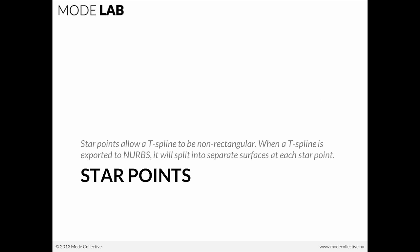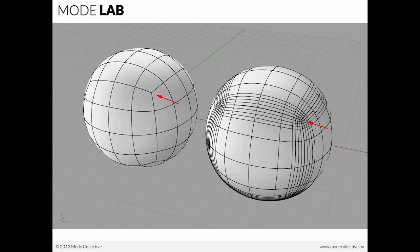The third are star points. Star points allow a T-Spline to be non-rectangular. And when a T-Spline is exported to NURBS, it will split into separate surfaces at each star point. Here you can see a star point at the corner of this T-Spline surface. And in the conversion process to NURBS, you'll see that we have here the patches of the NURBS within each of these segments, which is defined by the corner of this star. Or, I guess you could say the corner of these three quads, which is the star point.